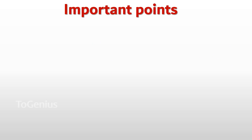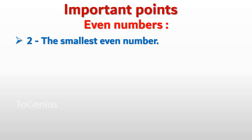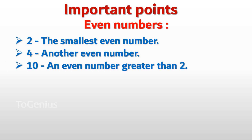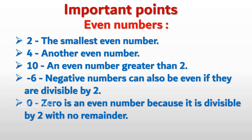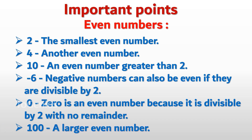Important Points — Even Numbers. 2 is the smallest even number. Number 4 is another even number. Number 10 is an even number greater than 2. Negative numbers can also be even if they are divisible by 2 — for example, negative 6. 0 is an even number because it is divisible by 2 with no remainder. Number 100 is a larger even number.